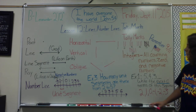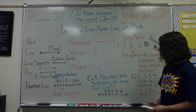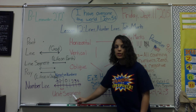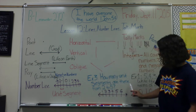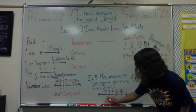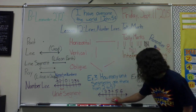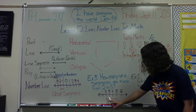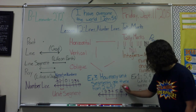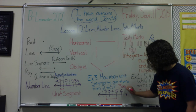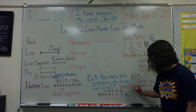We're skipping example two and doing example three. Example three asks: how many unit segments are there from two to five on the number line? We look at the number line from two all the way to five and count the spaces in between. I count one, two, three — so my answer is three unit segments. It's important to label the answer as 'unit segments' since that is what we are answering.